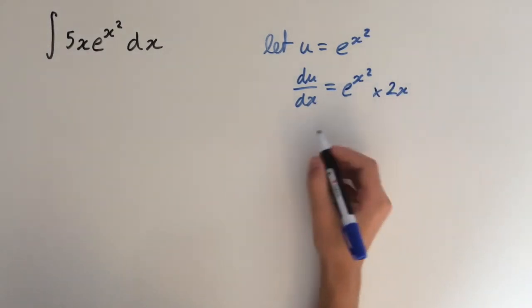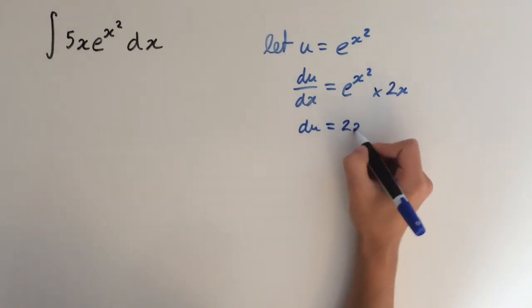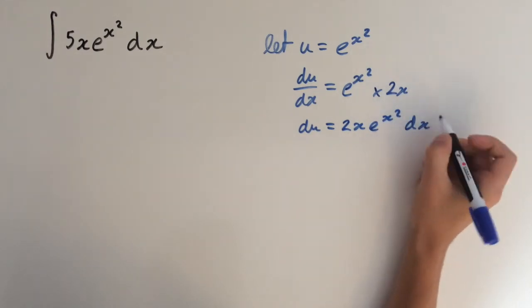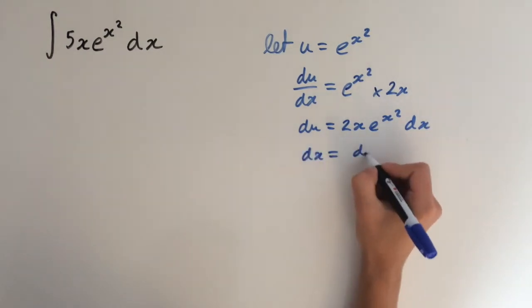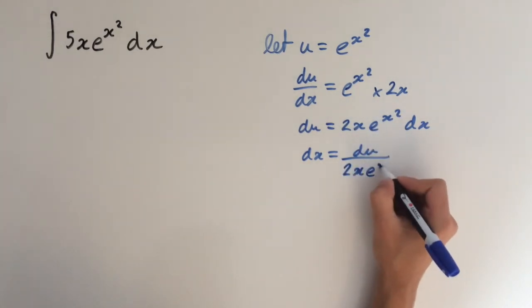Now we need to rearrange this a bit, so du equals—I'm going to bring this to the front—so 2x times e to the x squared times dx. And now I want to get dx on its own. So dx equals du over all of this stuff here, so 2x e to the x squared.